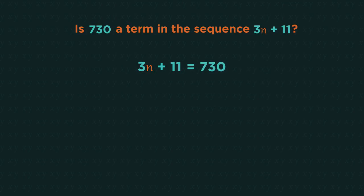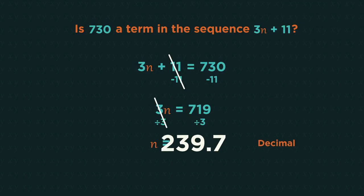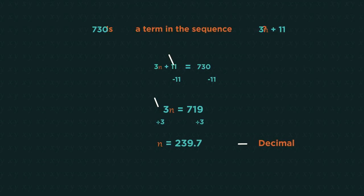Is 730 in this sequence? Then we just solve the equation. Because n has come out as a decimal it means 730 is not in the sequence.